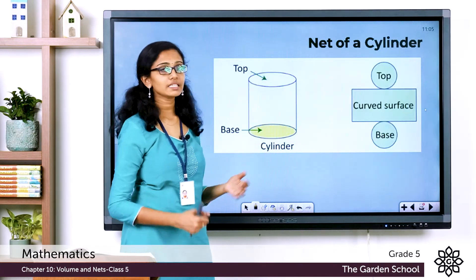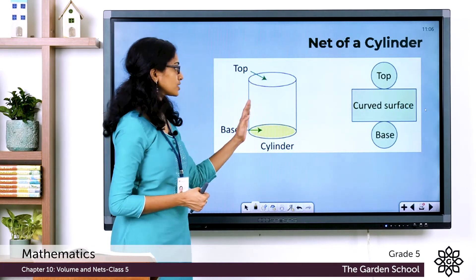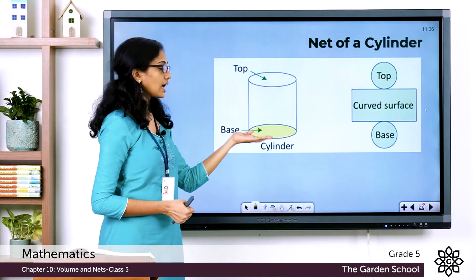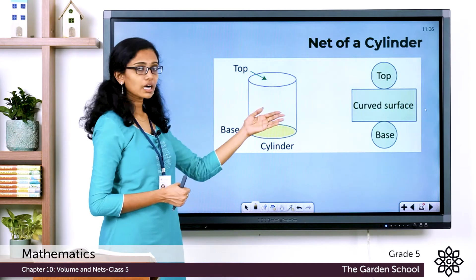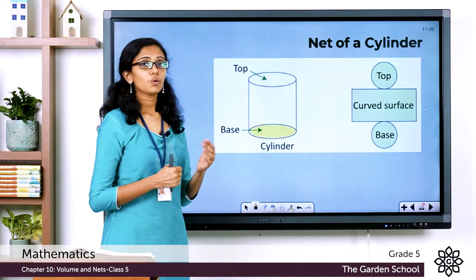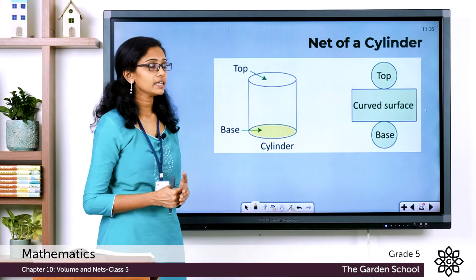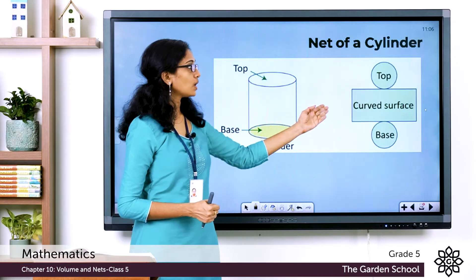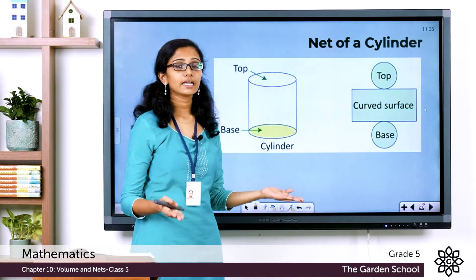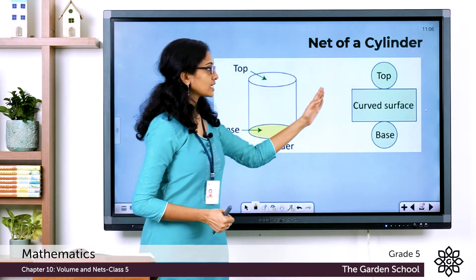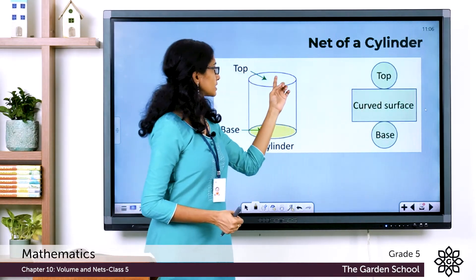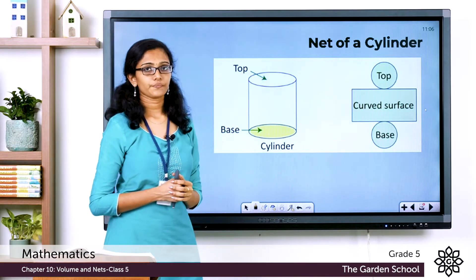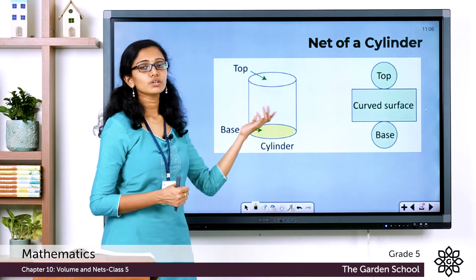Now we will see the net of a cylinder. The cylinder is a 3D shape which has got a curved face and also two flat faces — one at the top and one at the bottom. So there is a base, a curved face, and a top. If you cut open the cylinder and lay it out flat, you'll get a net like this. See how the curved face has changed to a rectangle when you cut it open and laid it out flat. The top and the base of the cylinder are represented as circles in the net.